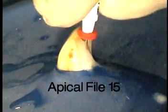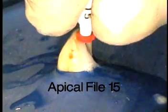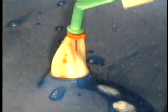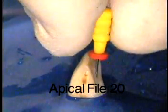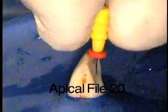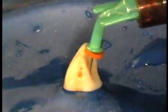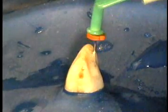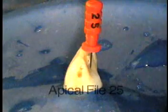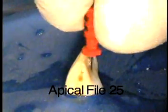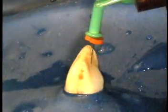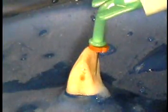These files are used in a conventional twist-pull or watch-winding motion. Sizes 25 on up have a slightly greater than ISO taper, so that when used with an ISO gutta-percha point for a single cone technique, tug-back is achieved at the tip.